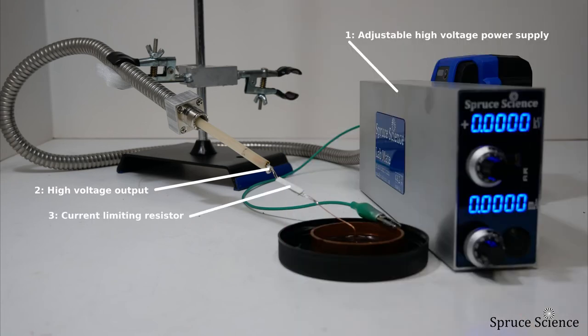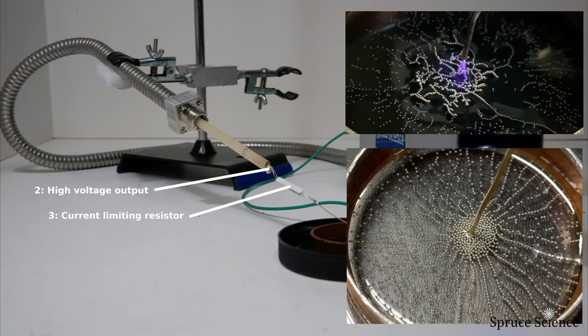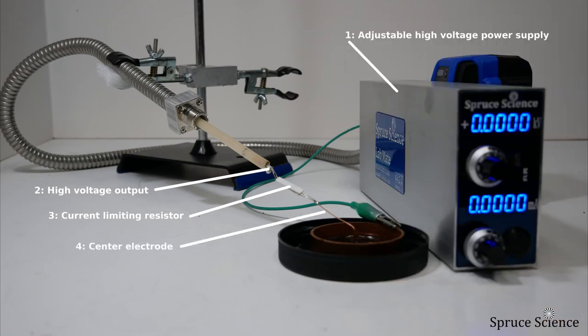High voltage output is soldered to the resistor in series and that limits the current output when arcing happens. A copper wire is soldered to the resistor and is placed at the center. This is where the positive 10kV is applied.